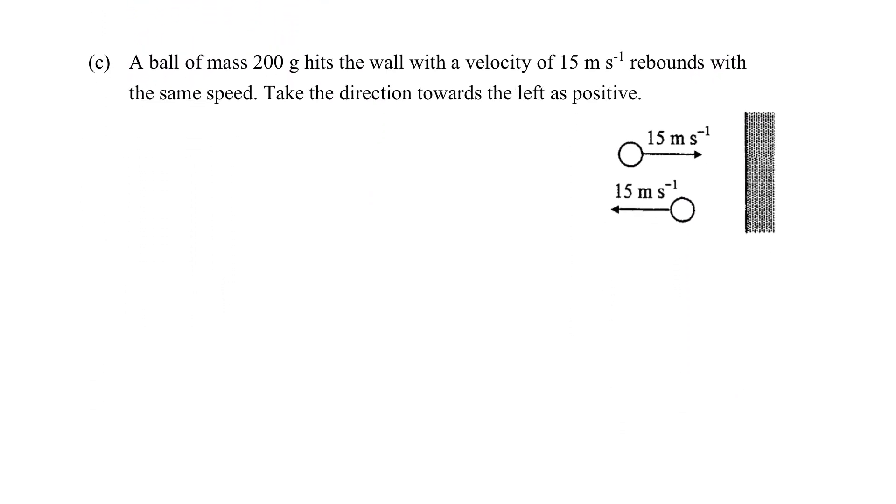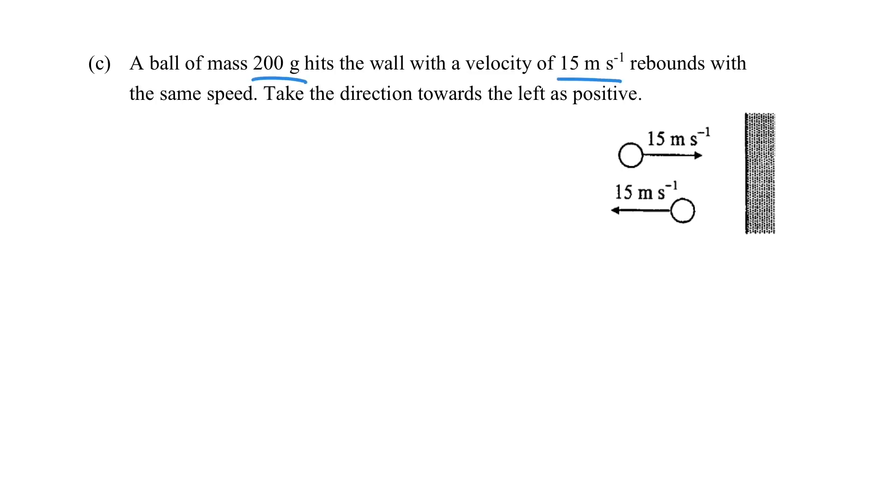How about this case? If there is a ball, 200 g hit on the wall and then come back with the same speed? It will take the left direction as positive. So the change of momentum will be final momentum minus initial momentum. So the final momentum, we have to consider the mass, but make sure we have to use kg as the mass when we consider the momentum. So it's 0.2 times 15 and then minus. Please note that the u is in negative direction. So we'll have the change of momentum in this value.